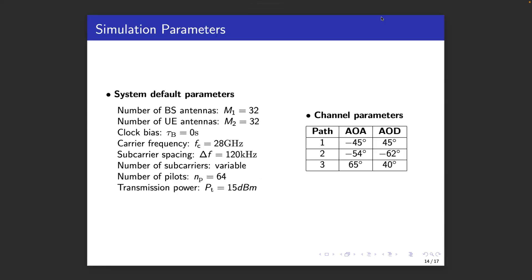Let's now look at some results. We consider a case with 32 antennas at the base station and the user and we will vary the bandwidth at the 28 GHz carrier frequency. Some of the other parameters are provided here as well. We will show results for channel parameter estimation, angles and delays and then for localization. All results are provided in RMSE.